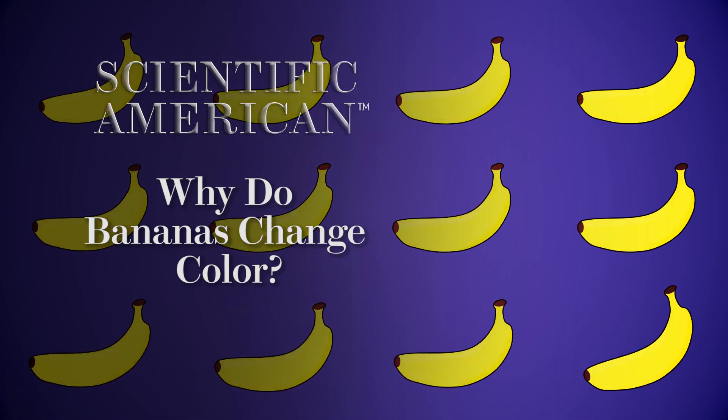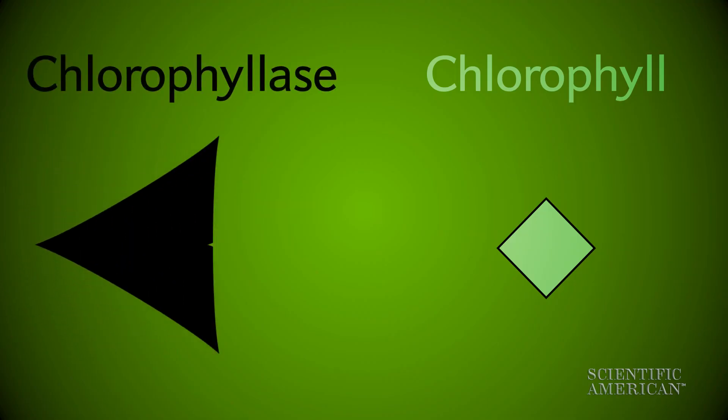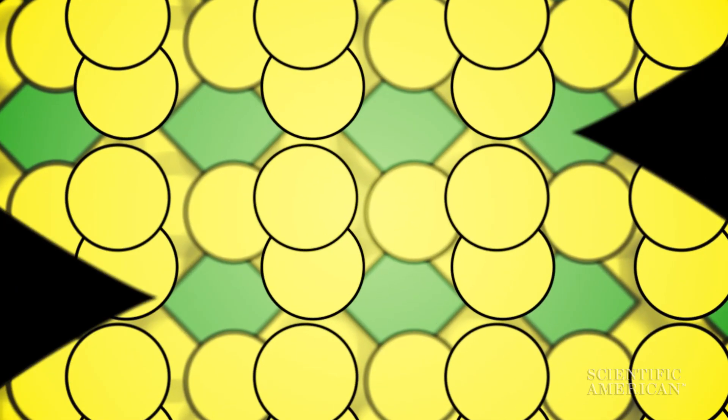Why do bananas change color as they ripen? The color changes from green to yellow when an enzyme called chlorophyllase breaks down the green chlorophyll in the peel. Yellow pigments are revealed, similar to leaves changing in the fall.